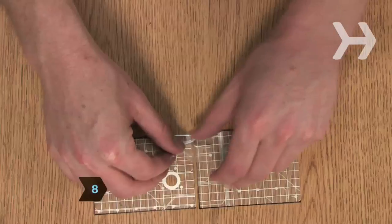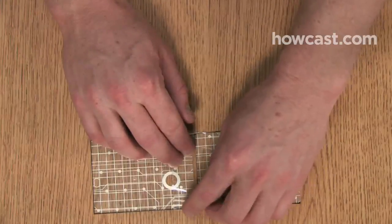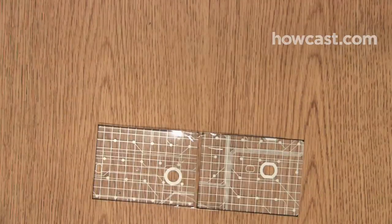Step 8. Repeat with another piece of tape and the other two three by four-inch circuit sheets. You have now assembled the two pieces of the wallet that will hold bills.